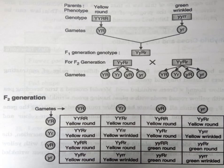So in this diagram, you can see the parents — yellow round and green wrinkled. Gametes are separated as capital YR and small yr. The F1 generation is YYRR. When the F1 generation is selfed, that is YYRR crossed with YYRR, 8 types of gametes can be seen.